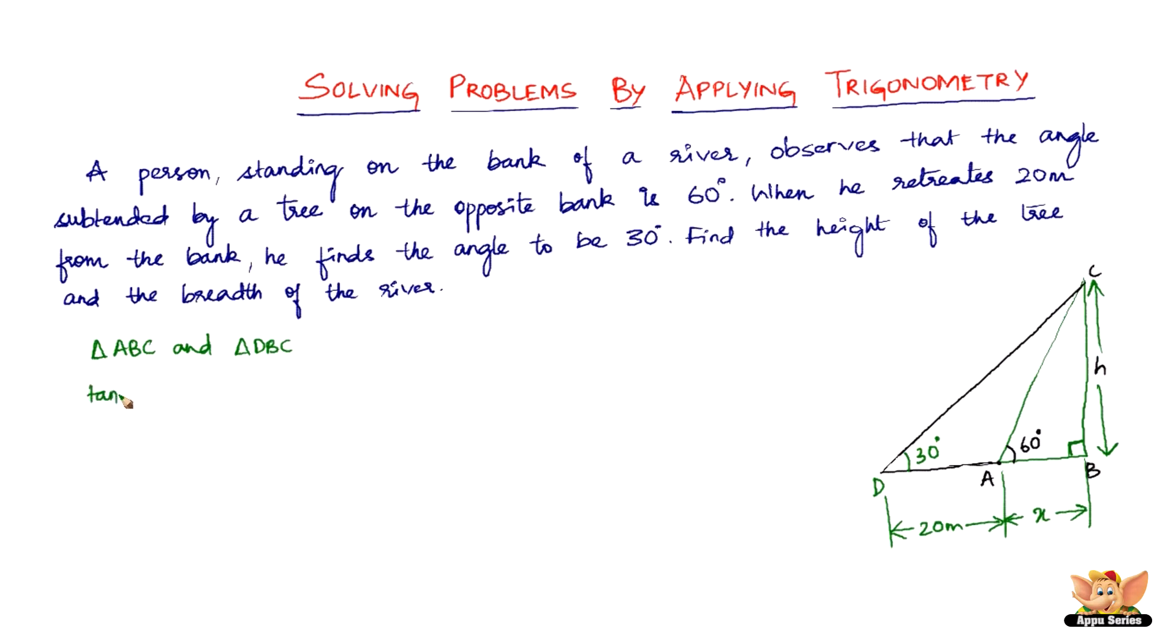Let's take tan, because we've got the adjacent and the opposite. So tan 60 equals opposite by adjacent, so opposite is h and adjacent is x, giving us h by x. We have tan 30 degrees here from the triangle DBC, the bigger triangle. We've got the opposite as h again and the adjacent as 20 plus x. So tan 60 is root 3, so root 3 equals h by x, and tan 30 is 1 by root 3, which equals h by 20 plus x.